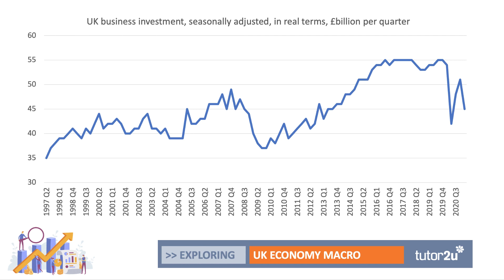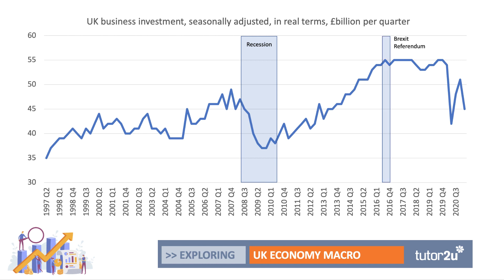Investment in the UK has been quite volatile from year to year over the recent past. This chart shows the quarterly level of business capital investment in the UK in real terms — billions of pounds per quarter. It fell during the recession following the global financial crisis, took a while to recover, but was doing pretty well and recovering quite strongly. 2016 marked a turning point: that was the Brexit referendum, and investment seemed to plateau after that point.